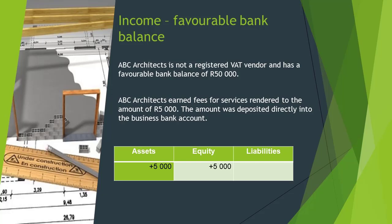Let's look at an example. ABC Architects is not a registered VAT vendor and has a favorable bank balance of 50,000 Rand. ABC Architects earned fees for services rendered to the amount of 5,000 Rand. The amount was deposited directly into the business bank account.